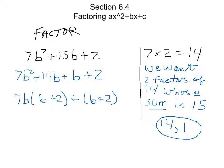Now I can factor out this b plus 2, and I get 7b plus, well really what I get, you can think of this as a 1 times a b plus 2. So I get 7b plus 1.